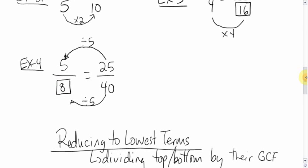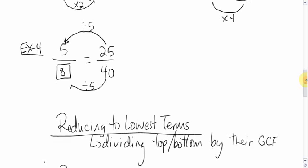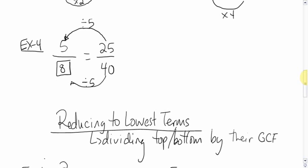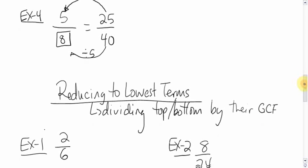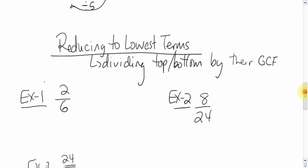This all leads us to reducing to lowest terms, which is basically dividing the top and bottom by their greatest common factor. That's one way to do it. That will give you the answer right away. There's sort of easier ways to do this as well, but it doesn't always give you the lowest answer you can get directly.